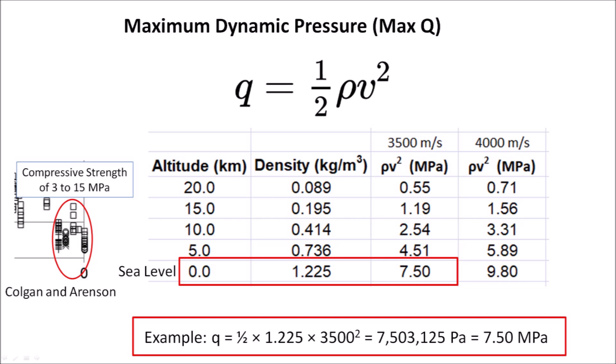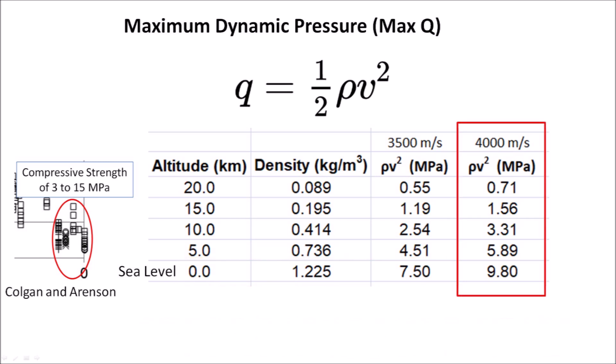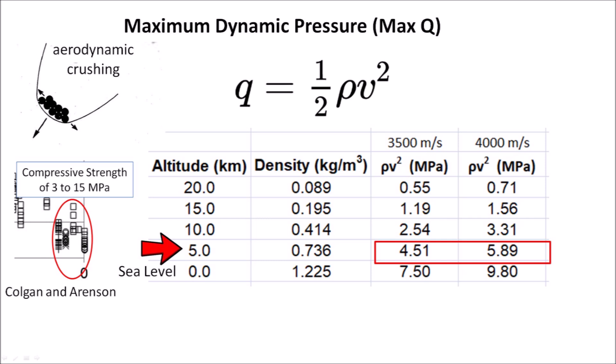This slide shows an example of the calculation of Max Q for a projectile traveling at sea level with a speed of 3,500 m per second. The result is given in pascals and can be expressed as megapascals by dividing by 1 million. The aerodynamic pressures are higher for ice boulders traveling at 4 km per second, but the values are still below the maximum compressive strength of 15 MPa for glacier ice near 0 degrees. Some weak ice boulders with a compressive strength of 3 MPa could have fragmented at an altitude of 5 km above the surface during reentry, but at a speed of 3.5 km per second, the pieces would have hit the ground 1.4 seconds after the fragmentation.